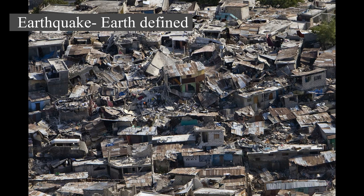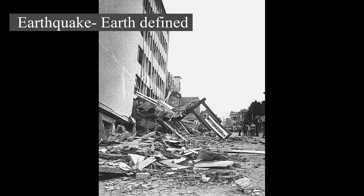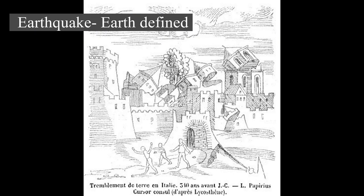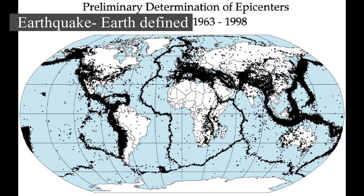The seismic activity of an area is the frequency, type, and size of earthquakes experienced over a particular time period. The seismicity at a particular location in the Earth is the average rate of seismic energy release per unit volume. The word tremor is also used for non-earthquake seismic rumbling. At the Earth's surface, earthquakes manifest themselves by shaking and displacing or disrupting the ground. When the epicenter of a large earthquake is located offshore, the seabed may be displaced sufficiently to cause a tsunami. Earthquakes can also trigger landslides. In its most general sense, the word earthquake is used to describe any seismic event, whether natural or caused by humans, that generates seismic waves.